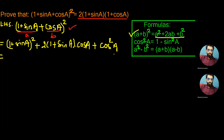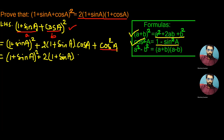As we know, cos square A can be expressed in terms of sin A from the formula: cos square A is equal to 1 minus sine square A. So we write the first and second parts as the same — that is, one plus sine A whole square plus 2 times one plus sine A into cos A — and we change cos square A to 1 minus sine square A.